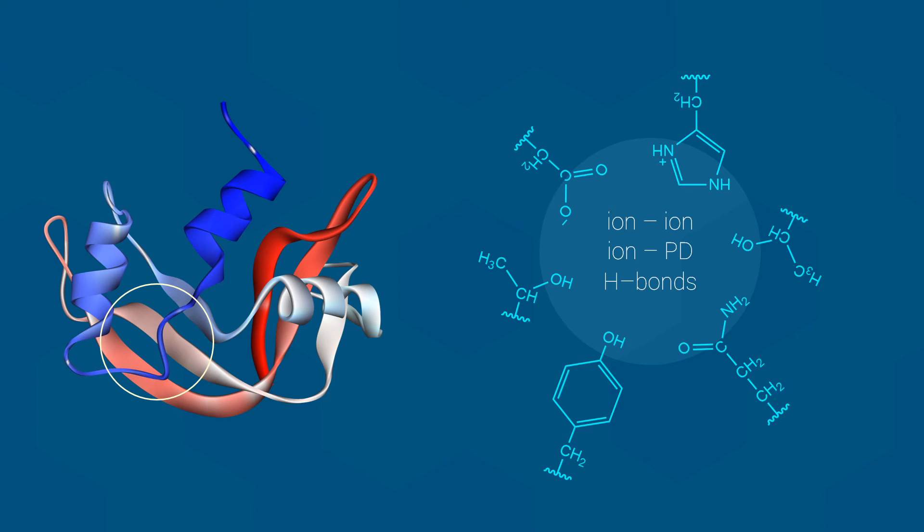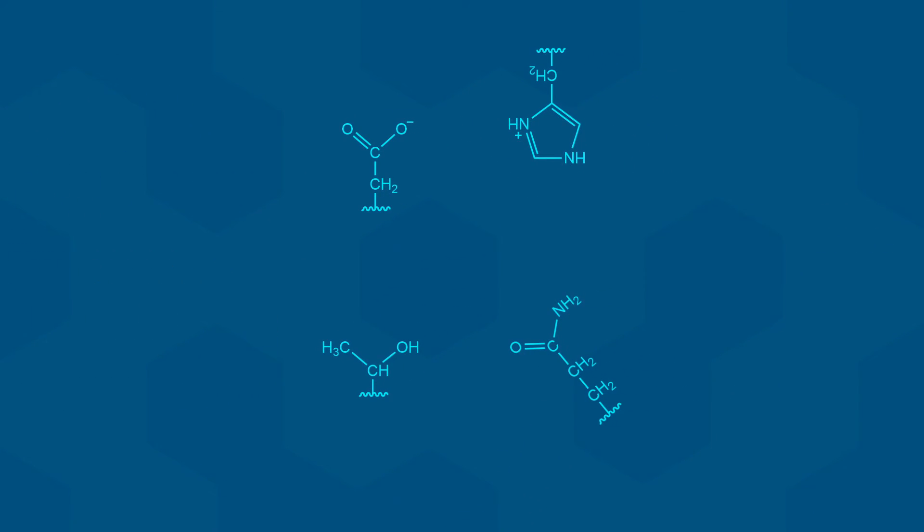Thankfully, here in Biology 112, we will keep it simple. We will only ever consider the interactions between any two amino acids. For example, the ion-to-ion interaction between an aspartate and a histidine or the hydrogen bond between a threonine and a glutamine.